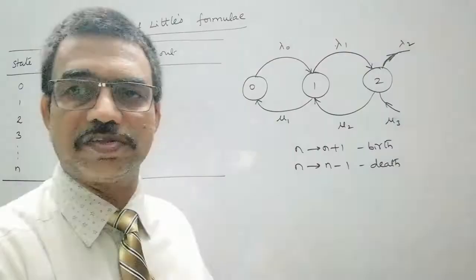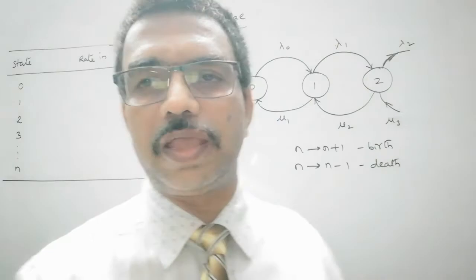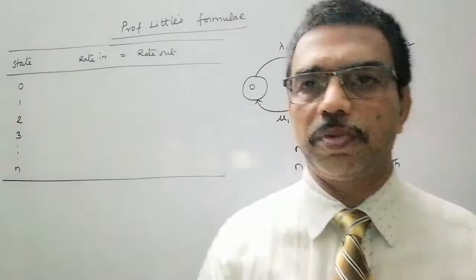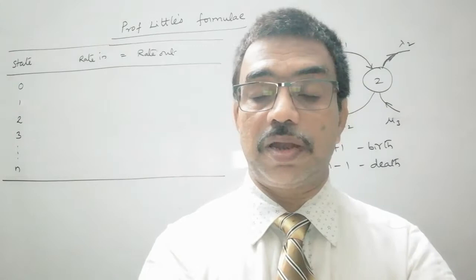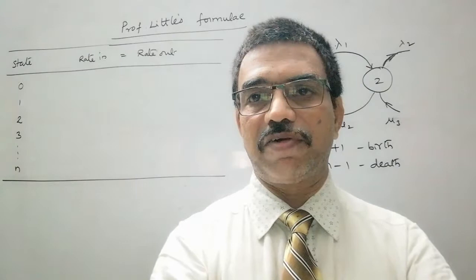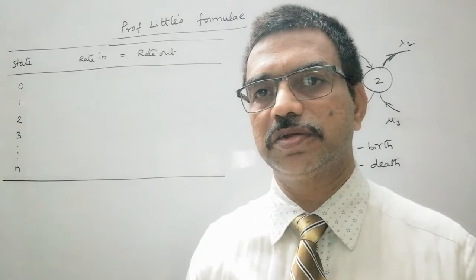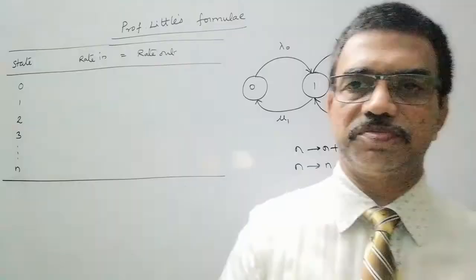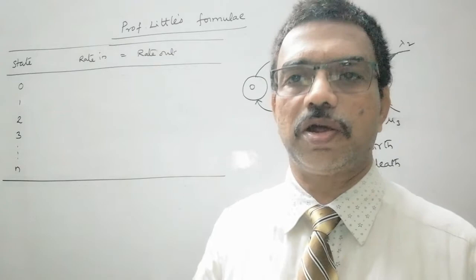Now coming to Professor Little's formulae. While studying any queuing system, we come across 4 queuing parameters: expected number of customers in the system, expected number of customers in the queue, average time spent by a customer in the system, and average time spent by a customer in the queue. Professor Little has derived expressions for these using the balance equation — rate in equal to rate out. Now let us see how it works.